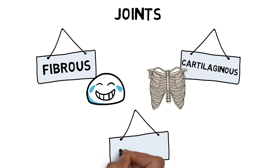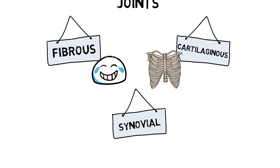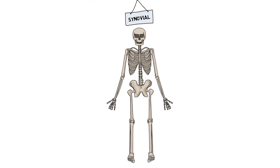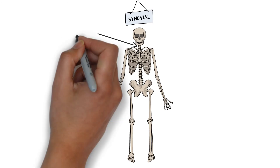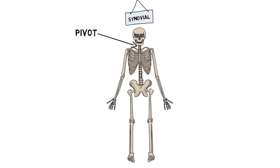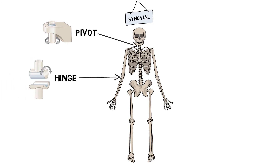And finally, synovial joints, the most common joint in the body. These joints produce synovial fluid that allows for a wide range of movements. There are six different types of synovial joints. Pivot joints only allow rotational movement, such as in your neck when shaking your head no. Hinge joints act just like a door hinge, and only allow flexion and extension of a joint in one direction, such as our elbows or knees.